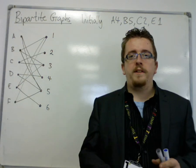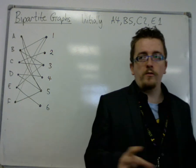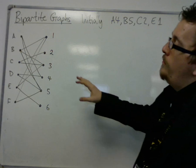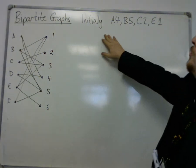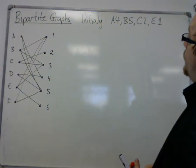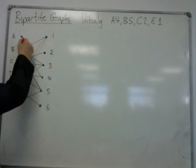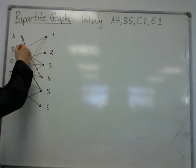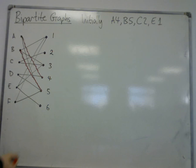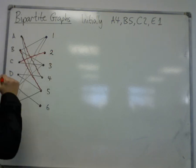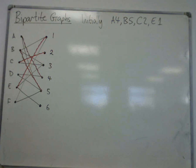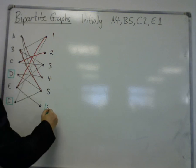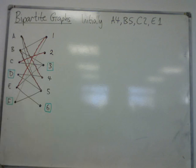I'm going to work through a slightly more complicated alternating path algorithm problem on a bipartite graph. In this one we've got six workers and six tasks for them to do. We've got an initial matching to start off with, so let's colour these in: A to four, B to five, C to two, and E to one. That's my initial matching. What you'll notice here is that there are actually two workers left unassigned, and there are two tasks which are left unassigned.